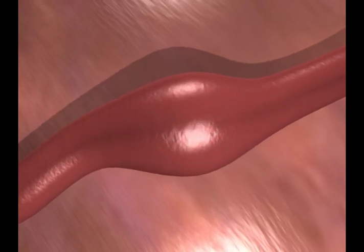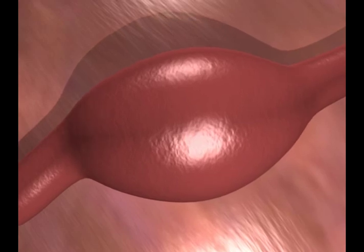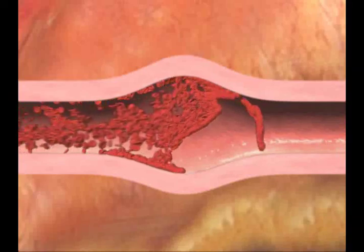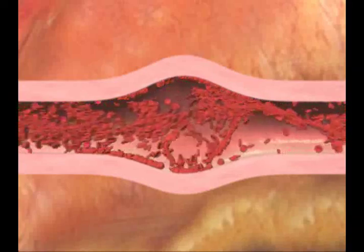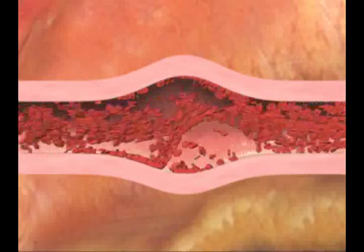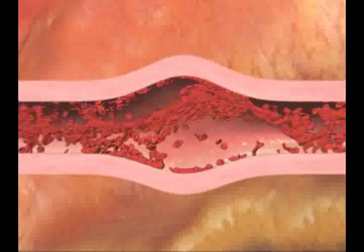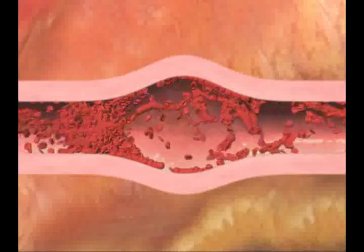Sometimes this results in a ballooning out of the wall, called an aneurysm. This ballooning of the vessel causes the blood to swirl and increases the risk of blood clot formation. If the blood clot continues to grow, this may result in blockage of the vessel and a heart attack.